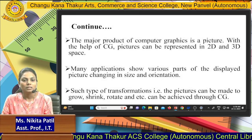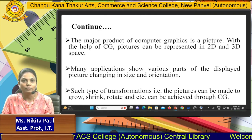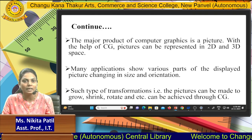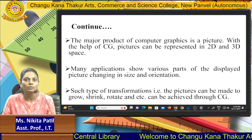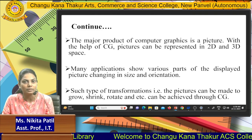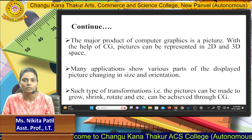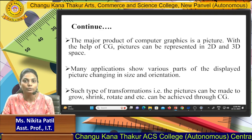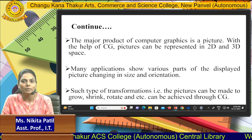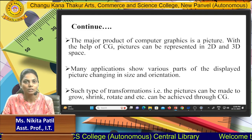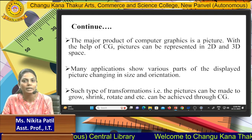The main product of computer graphics is the picture. With the help of pictures, you can design or create any graphics and animations. Pictures can be represented on 2D and 3D pages, and for that we can use different types of images like bitmap images and vector-based images.